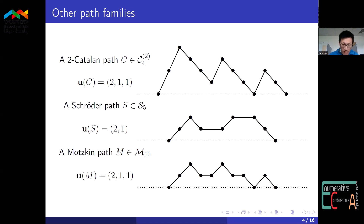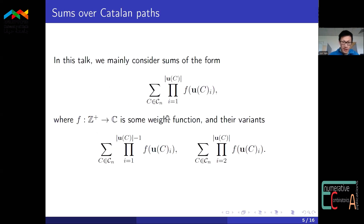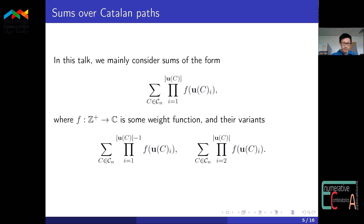I'll briefly mention some results for these other path families later on, but the focus will be on sums over Catalan paths. These sums are of the following form: we have a weight function F defined on the set of positive integers, and for each Catalan path we sum a product over the entries of the vector U of C. We take the product of F applied to the i-th entry of this vector. For example, if F is just the identity function F(x) = x, this sum will be the sum over the product of all entries in U of C. For different applications we'll choose different suitable weight functions, and it also turns out that for some applications we might look at two variants: one where we omit the last term in the product, and one where we omit the first term.